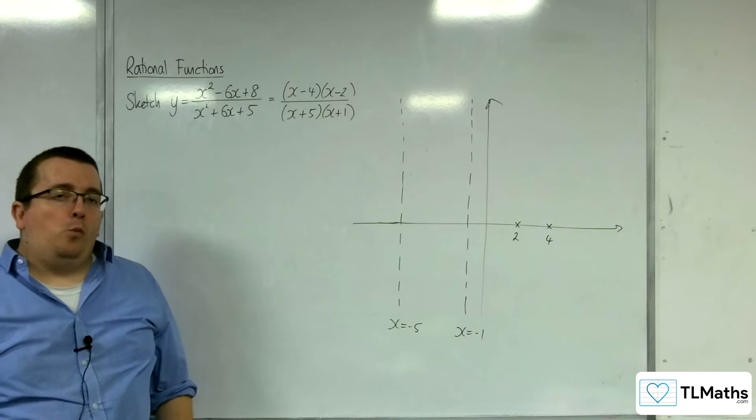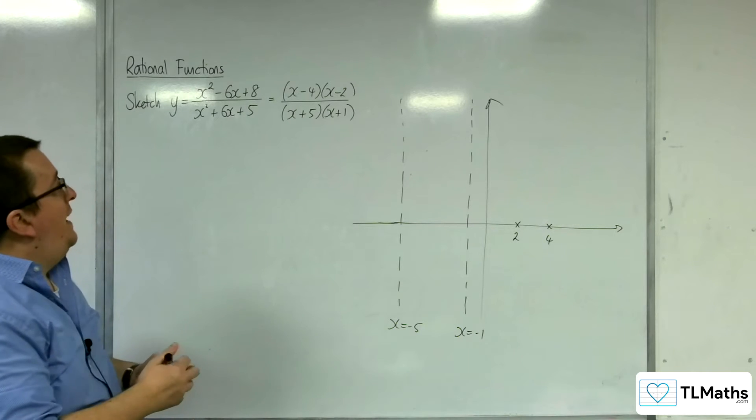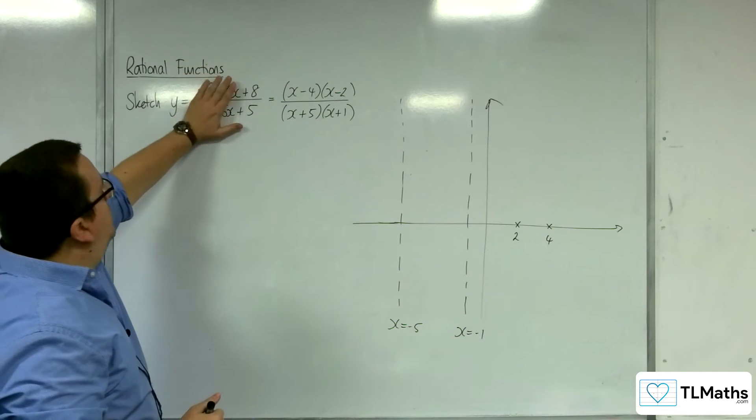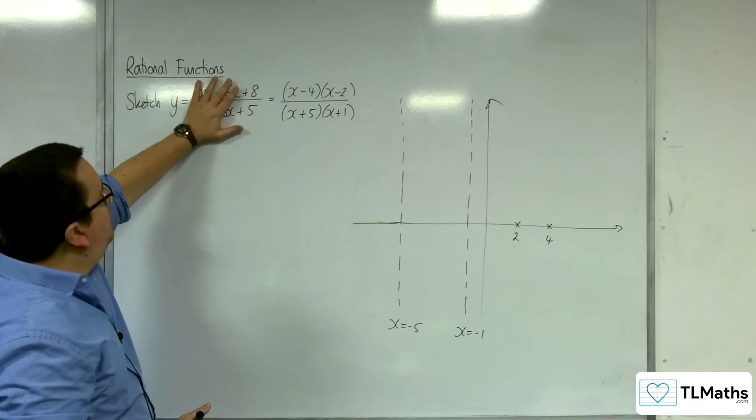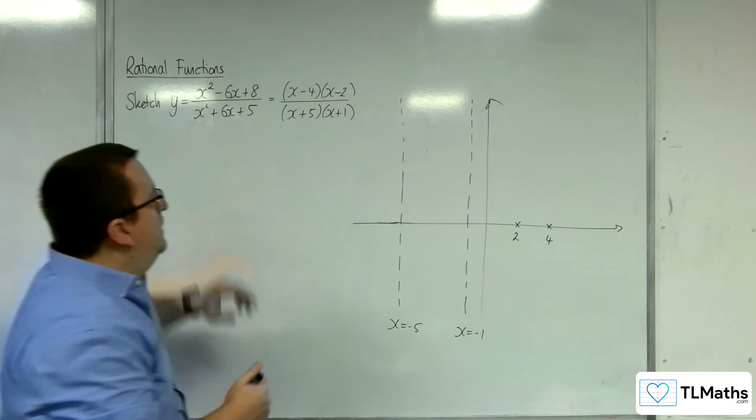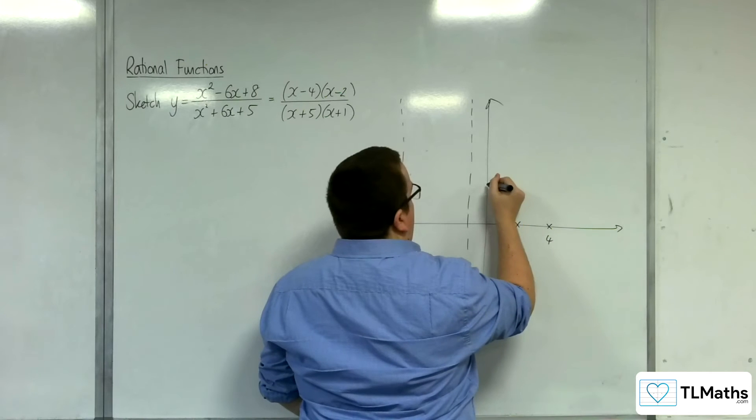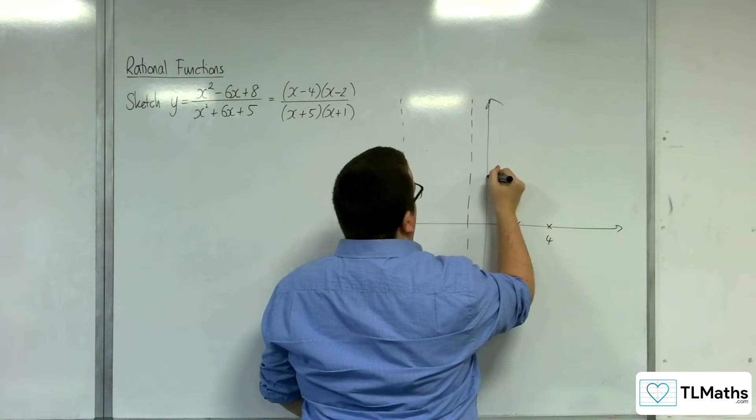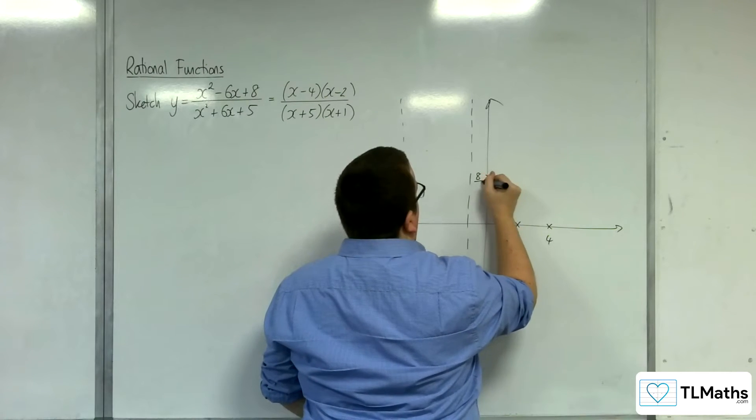Next we want to know where it crosses the y-axis. So that's going to be when x is 0, which is going to be at 8 over 5. So 8 fifths. Let's put that right there.